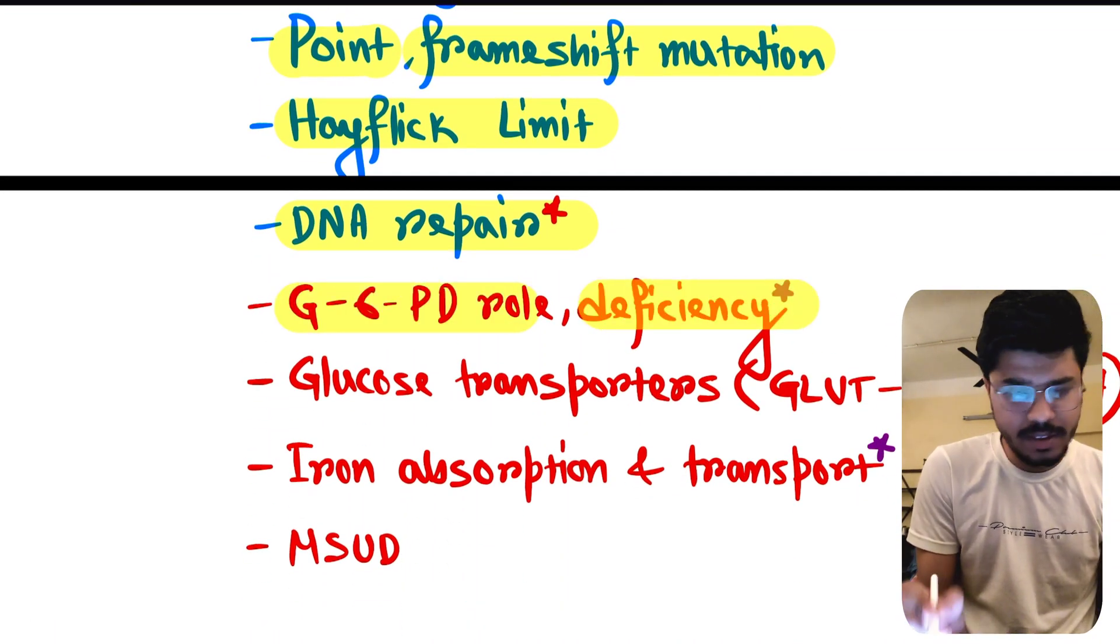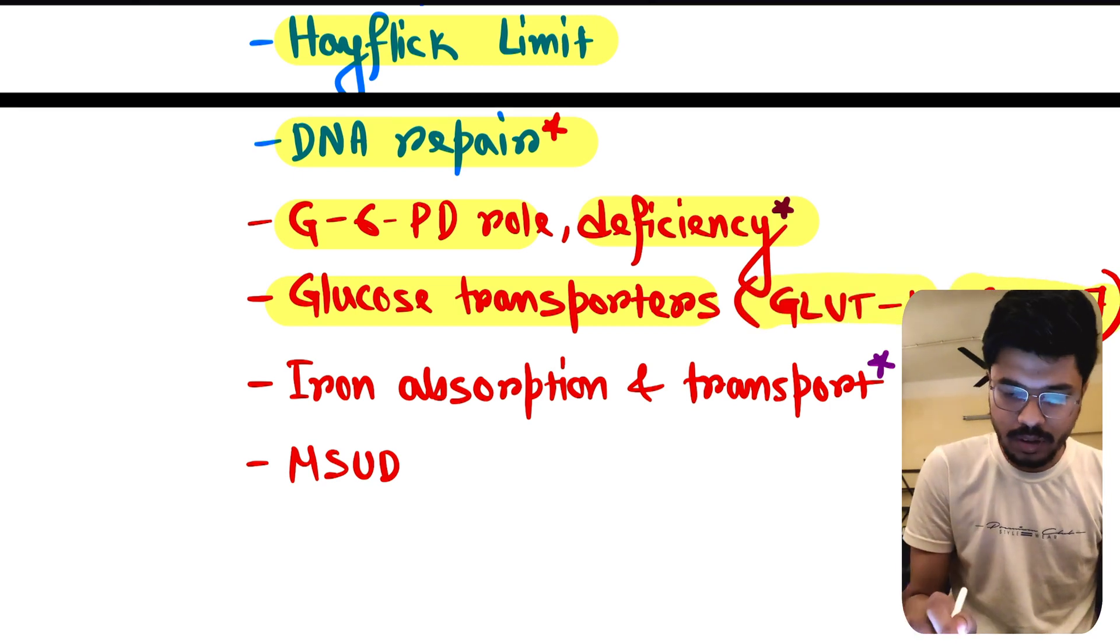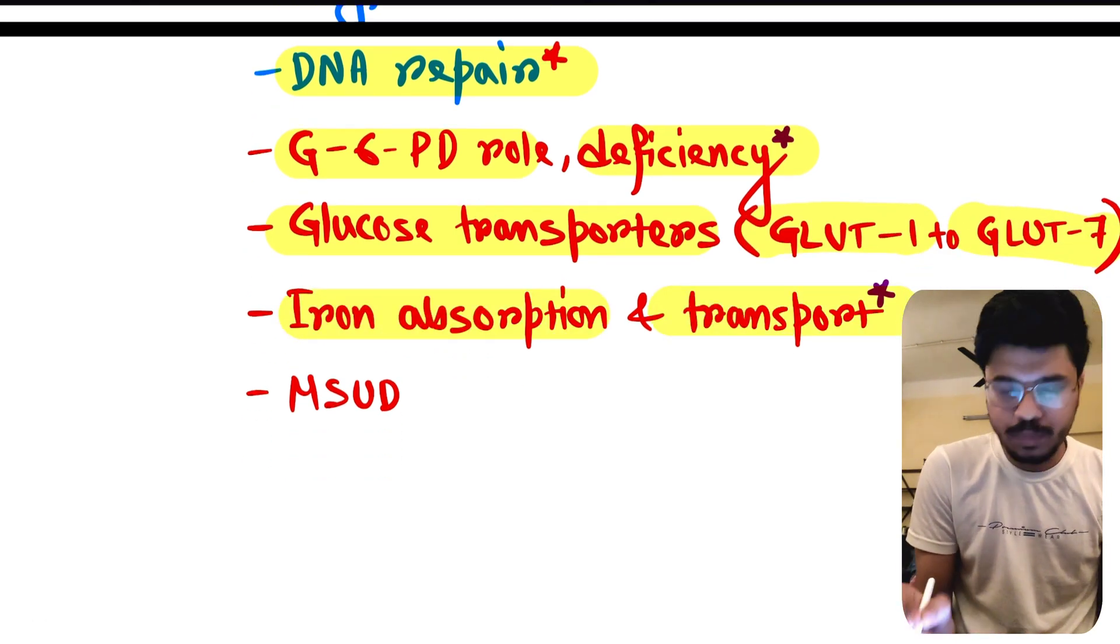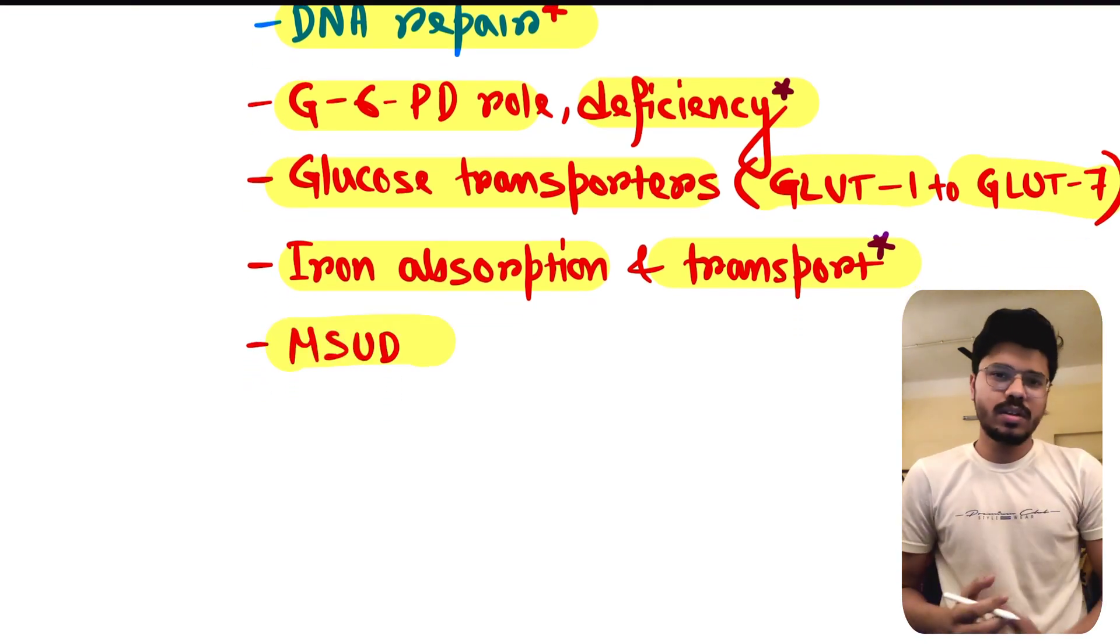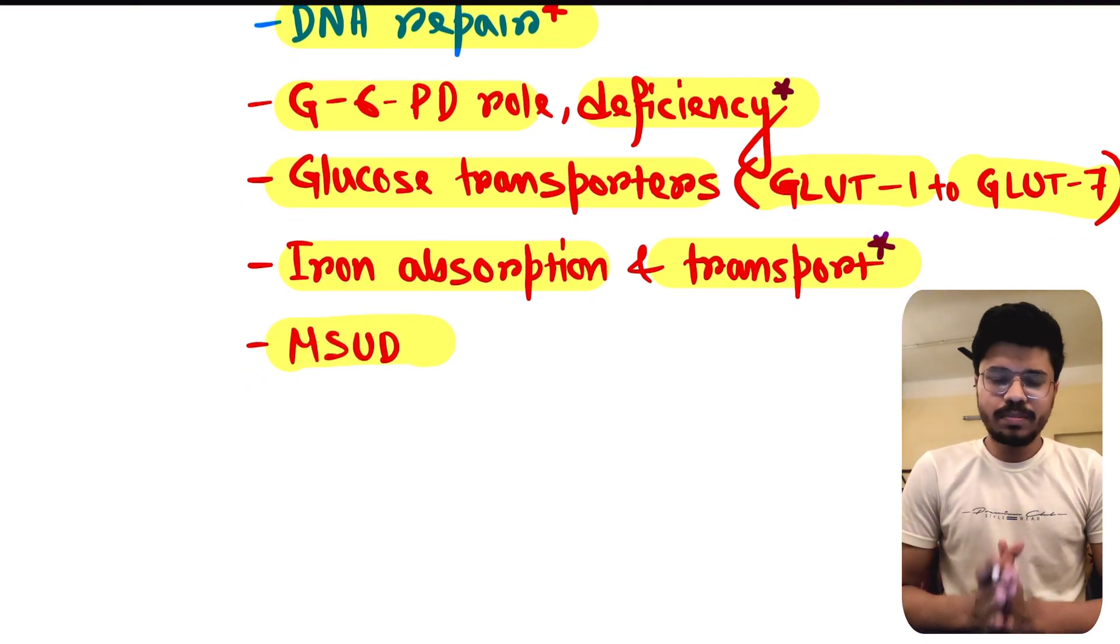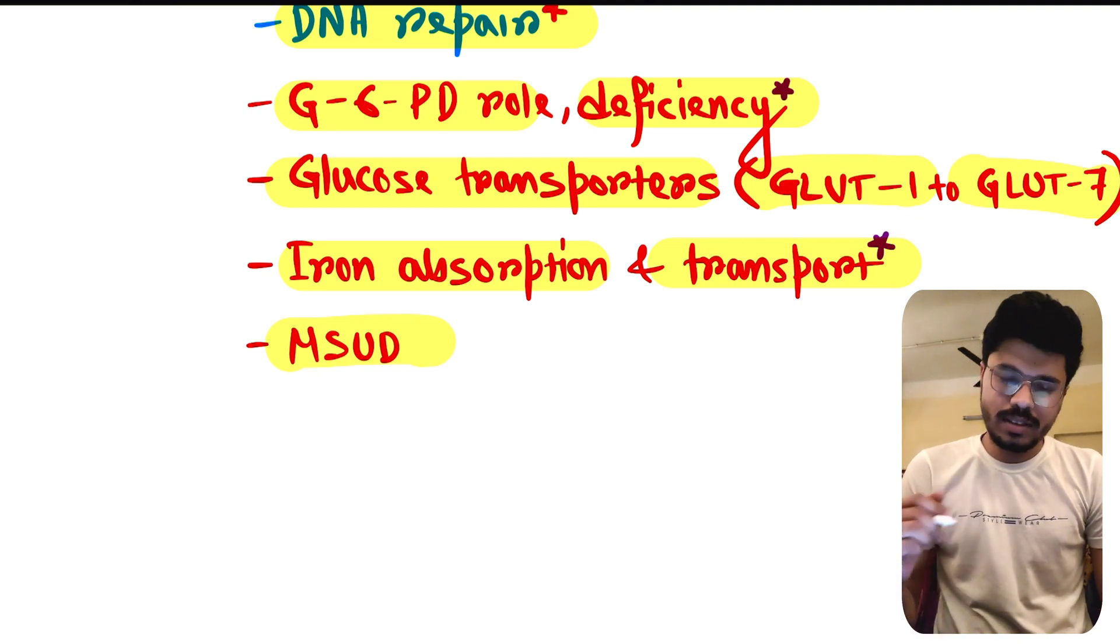G6PD role and deficiency, glucose transporter GLUT-1 to GLUT-7, all are important. Iron absorption and transport, this is extremely important, and maple syrup urine disease. There are many important topics but at least you cannot skip these topics. So please revise these topics at least once before the exam. In the next videos we discuss about other subjects. So tada!